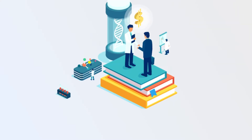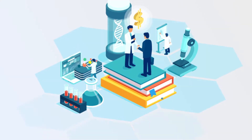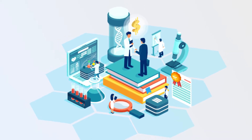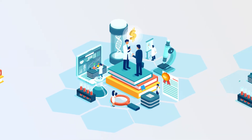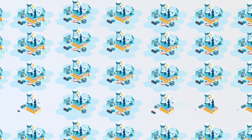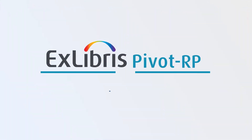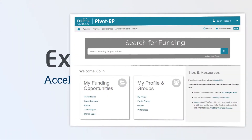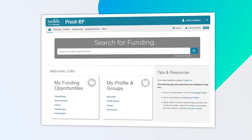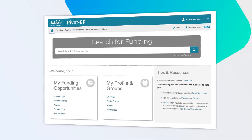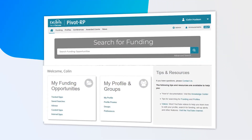Locating and securing research funding is highly competitive, with limited funding opportunities and an ever-growing number of researchers who are looking for that next grant. PivotRP accelerates the research process by integrating the discovery of funding opportunities and potential collaborators into one powerful tool.